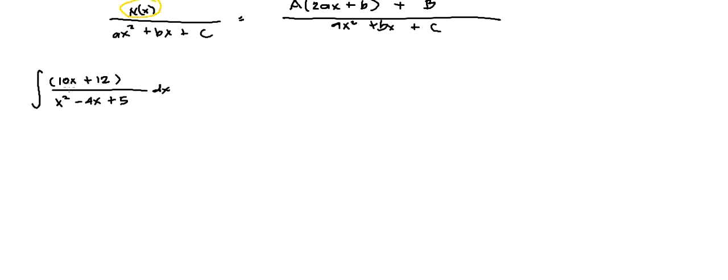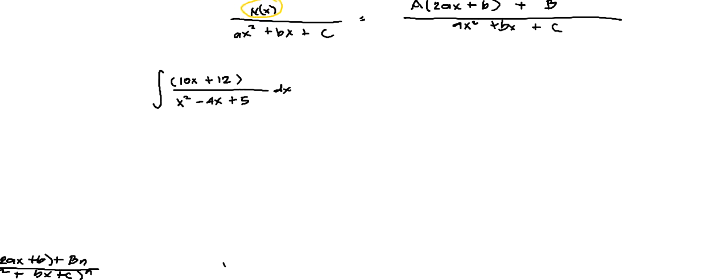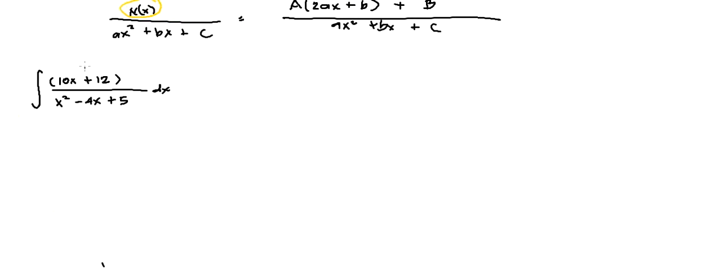Having this, our n(x) is 10x plus 12 and we have the denominator which is in quadratic form, right? So we have the ax squared plus bx plus c.